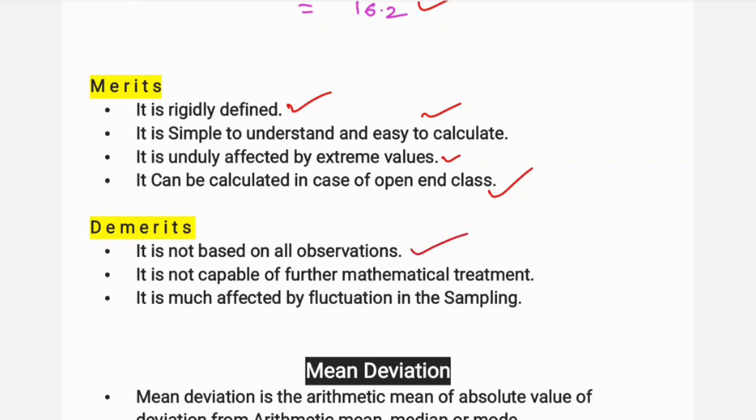Demerits: It is not based on all observations. It is not capable of further mathematical treatment. It is much affected by fluctuation in the sampling, with different samples from the population. These are the merits and demerits of quartile deviation.